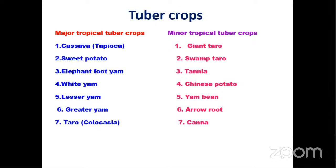These are the categories of major and minor tropical tuber crops. The major crops include cassava (tapioca), sweet potato, elephant foot yam (also called jimikand or suran in Marathi), white yam, lesser yam, greater yam — these are Dioscorea species — and taro (also called colocasia). Minor tuber crops include giant taro, swamp taro, tannia, Chinese potato, yambea, arrowroot, and canna. Interestingly, Britannia prepares one biscuit using arrowroot powder — it is also one of our tropical tuber crops.